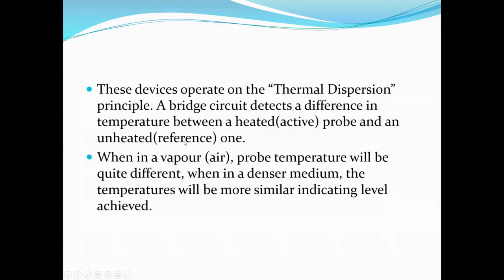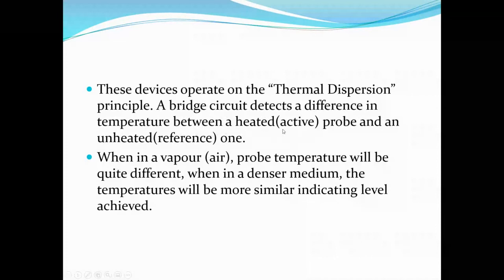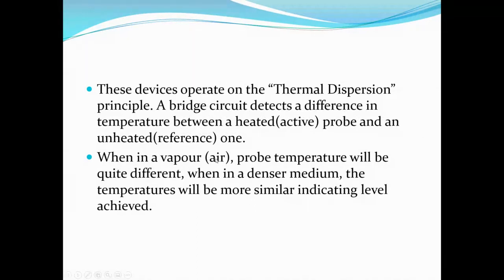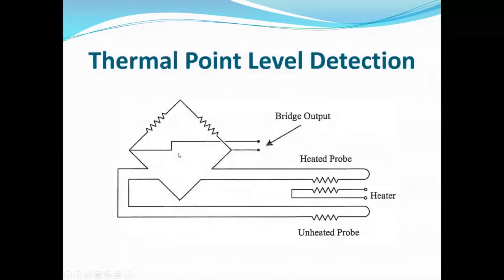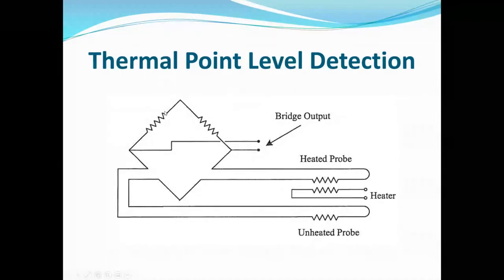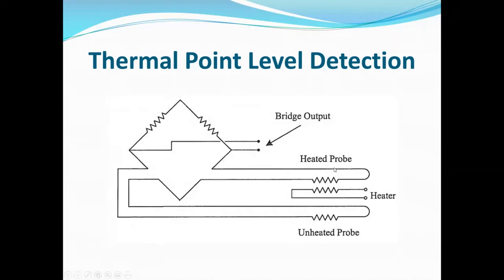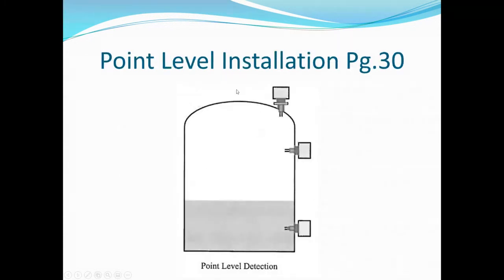Thermal dispersion devices operate on the thermal dispersion principle. A bridge circuit — the Wheatstone Bridge — detects a temperature difference between the heated (active) probe and the unheated (reference) probe. In vapor or air, probe temperatures will be quite different; in a dense medium, temperatures are more similar, indicating the level has been reached. Used for point level detection, just like any other switch — where you put it is where it works: vertically, horizontally, whatever the application requires. No real calibration per se — it's either thermally different or it's not.